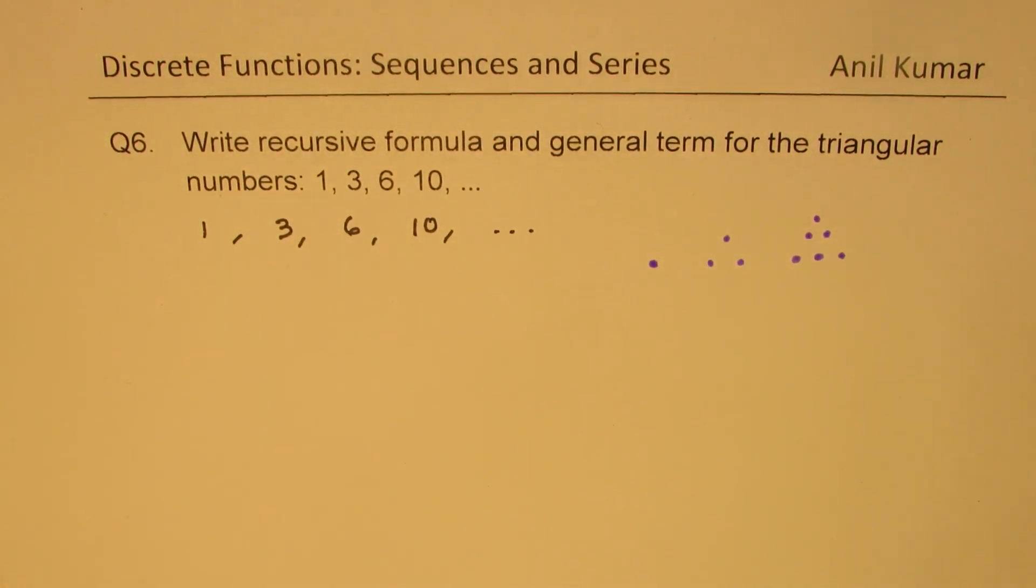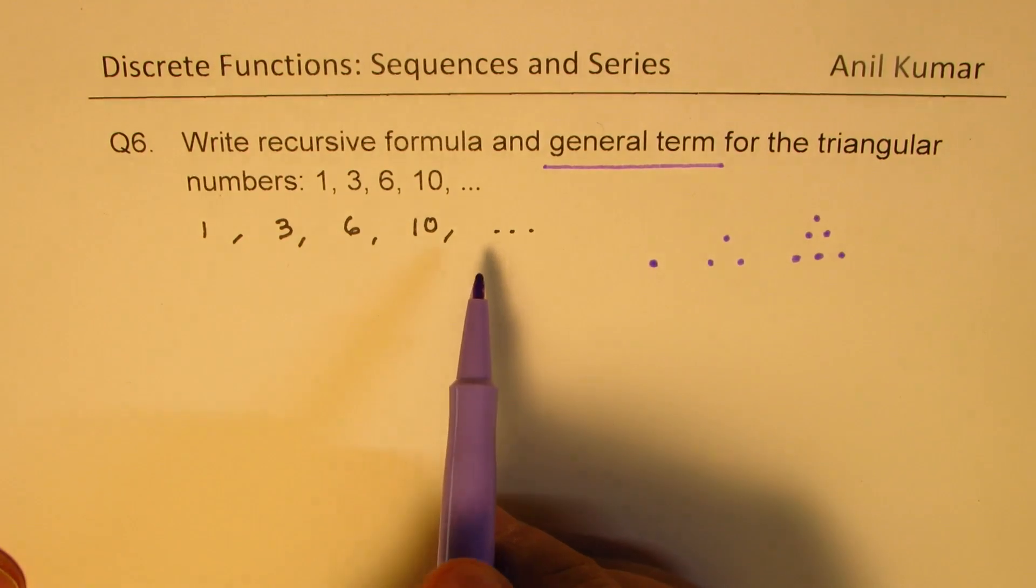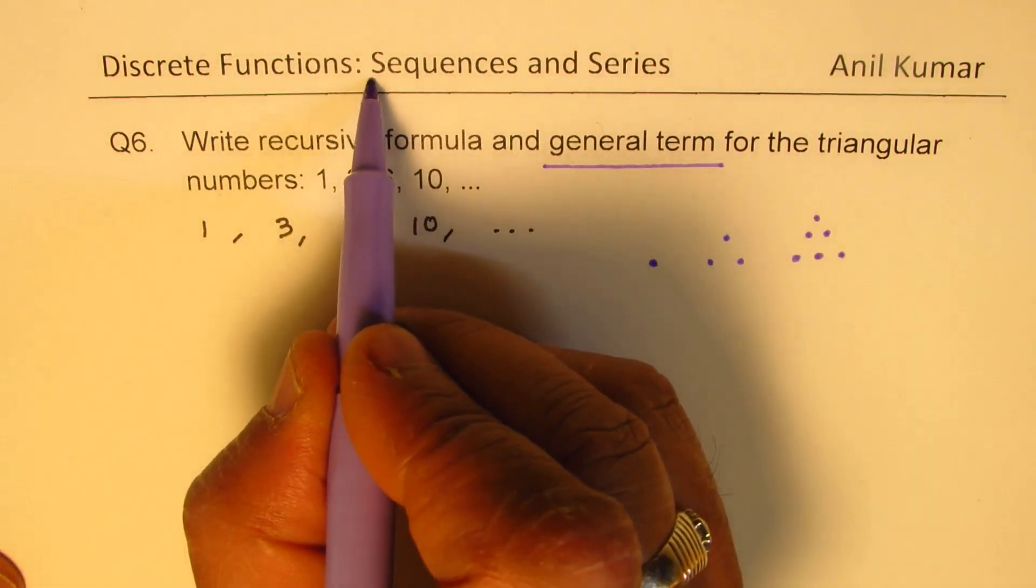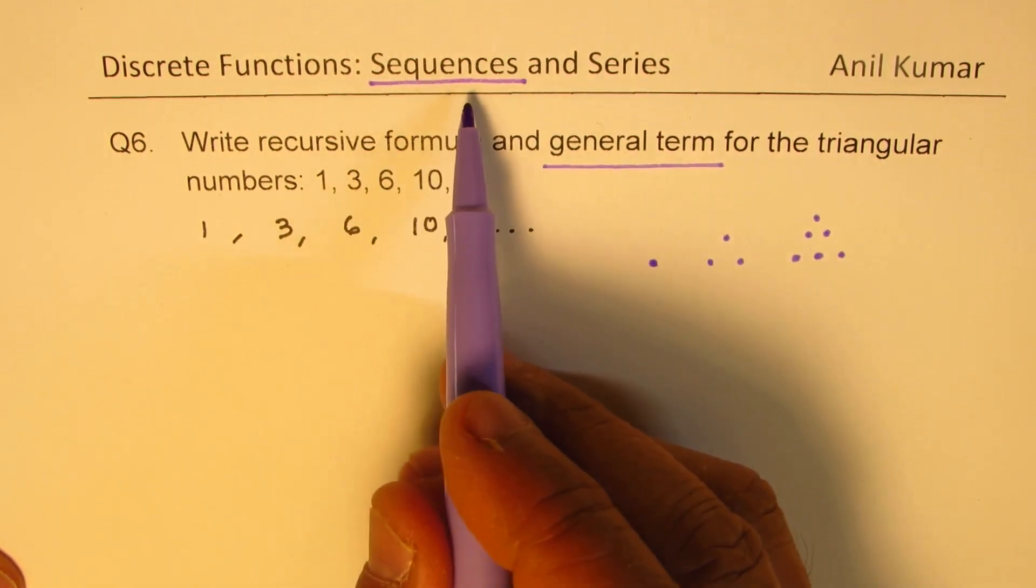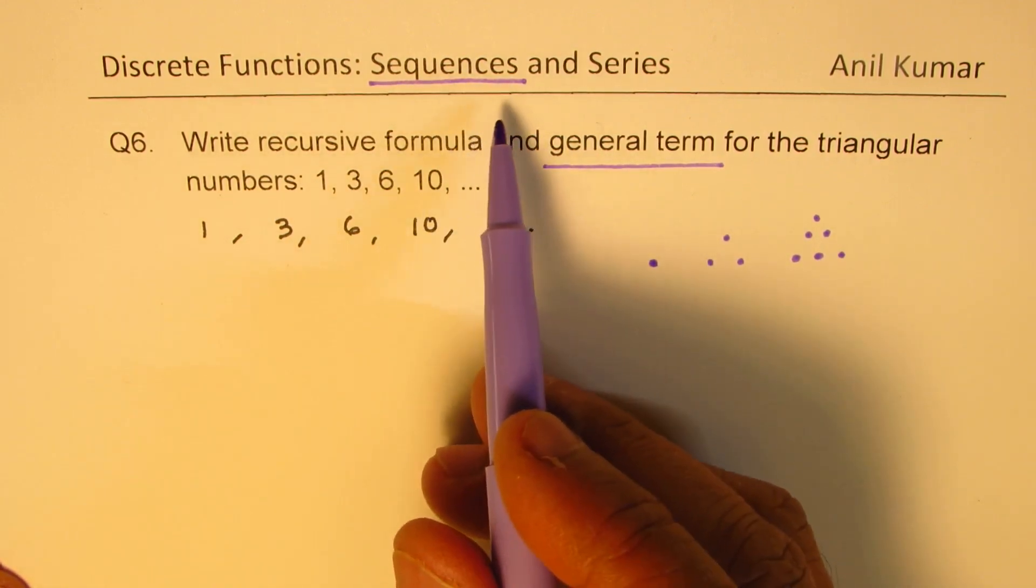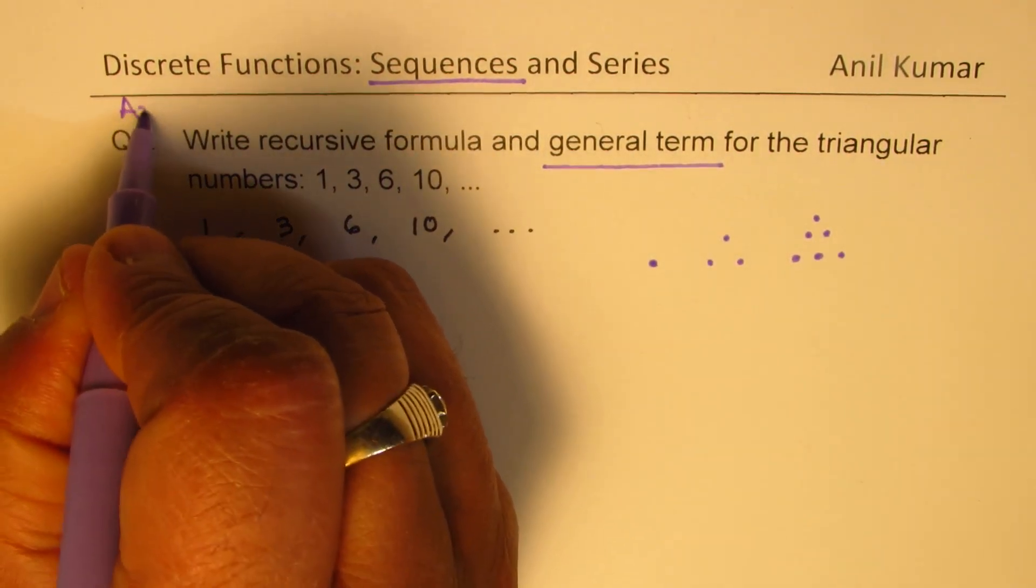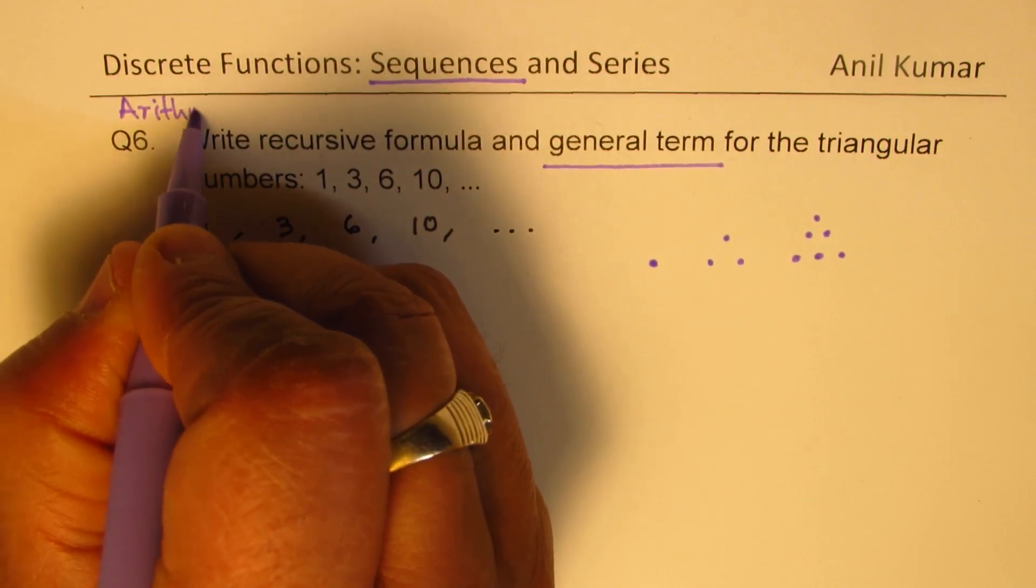That is how you could build your triangle and you get the number of dots as 1, 3, 6, and 10. That is the reason why this is called triangular number sequence. Now let's see how to find the general term. It is important to note that when we are talking about sequences, sequences could be arithmetic, geometric, or others.